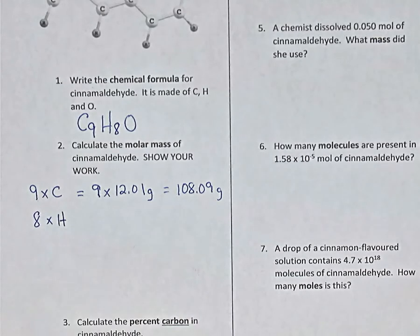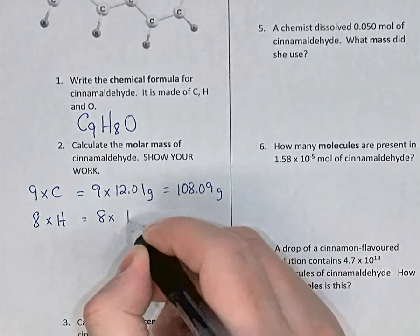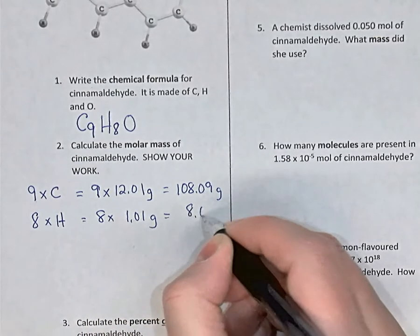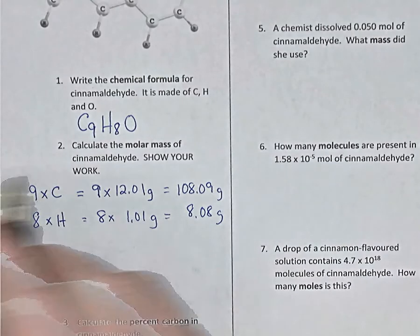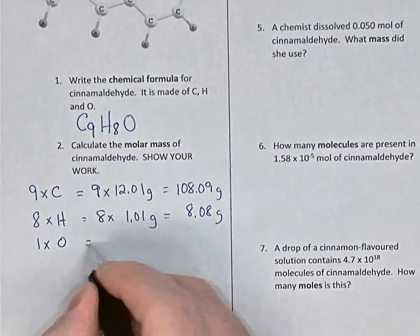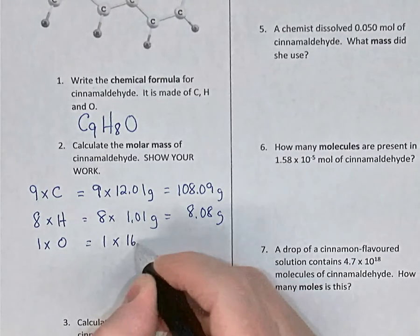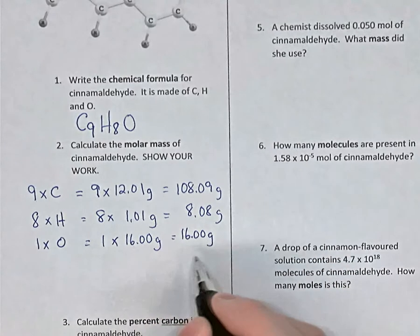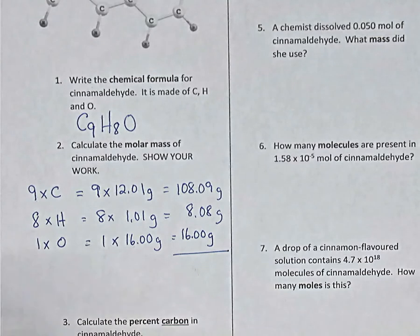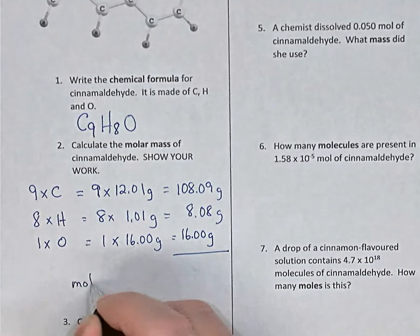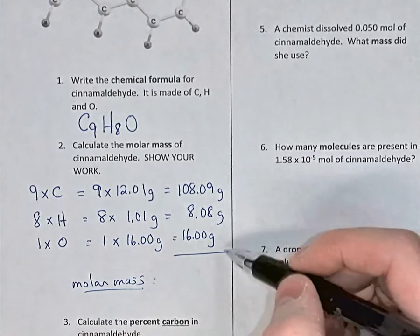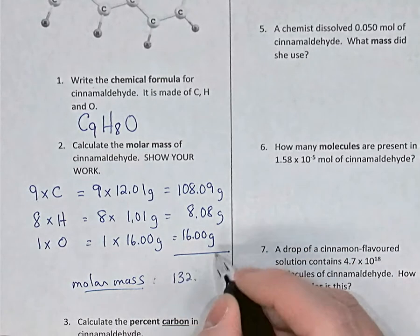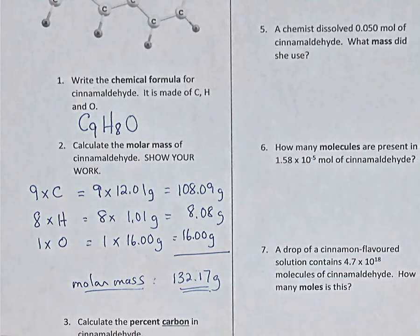We have eight hydrogens in the formula, so in one mole of cinnamaldehyde there are eight moles of hydrogen. Eight times hydrogen's molar mass of 1.01 grams gives 8.08 grams of hydrogen. Then we have one oxygen: one times 16.00 grams gives 16.00 grams of oxygen. Adding those up, the molar mass of cinnamaldehyde is 132.17 grams per mole.